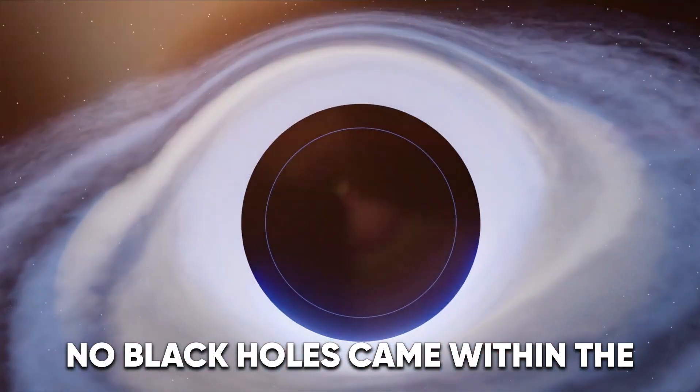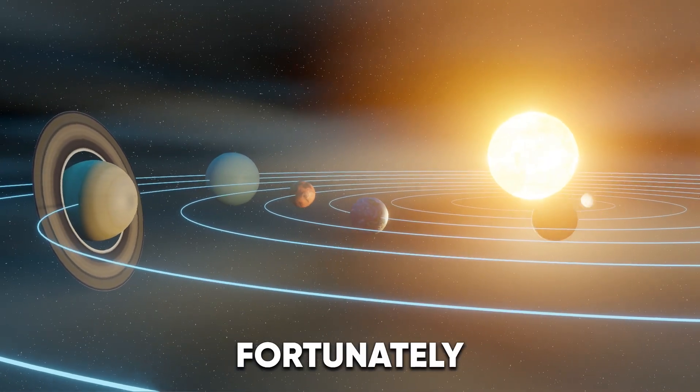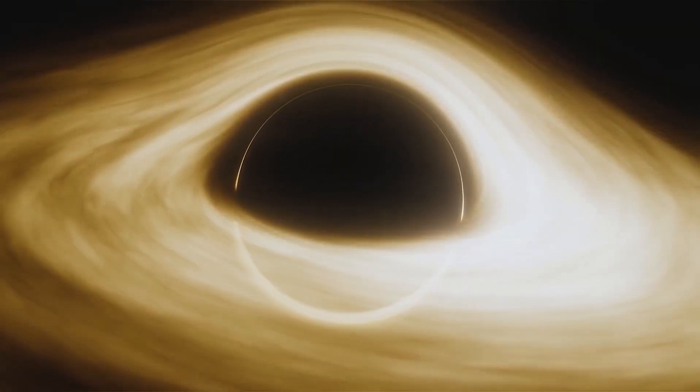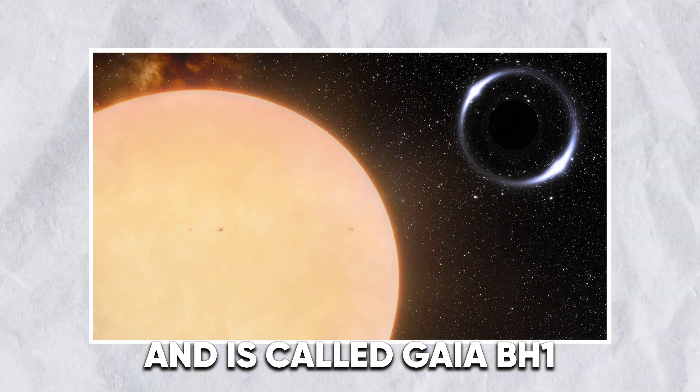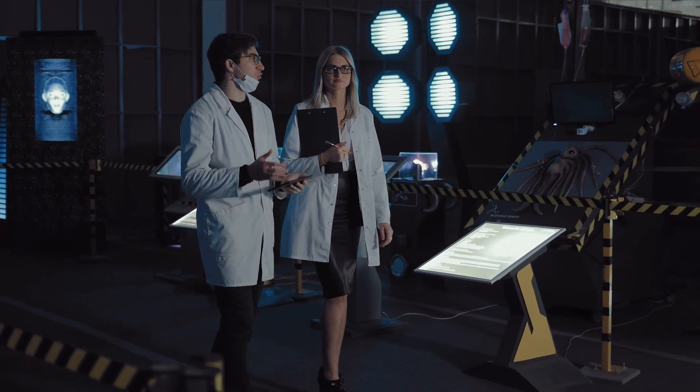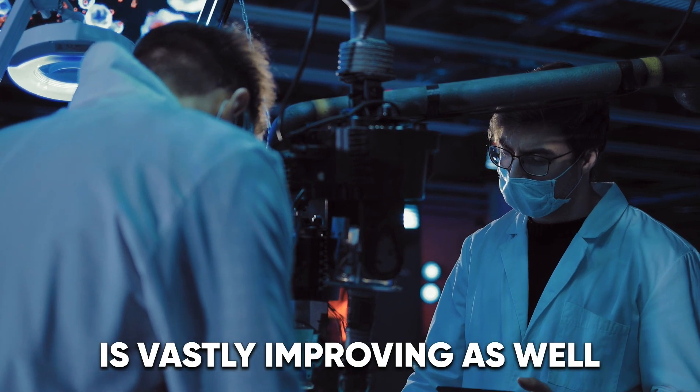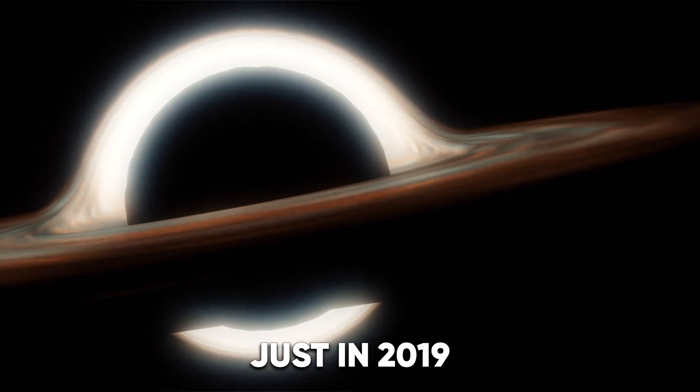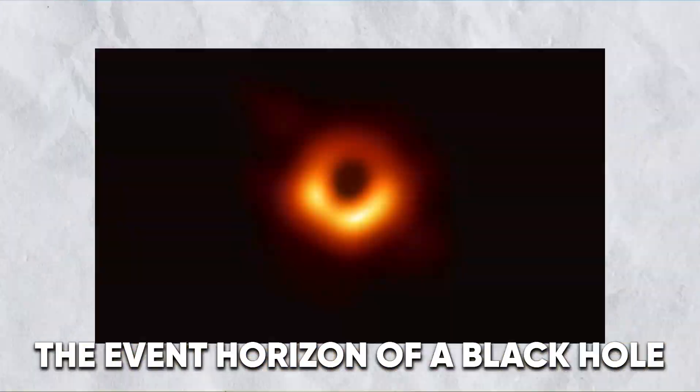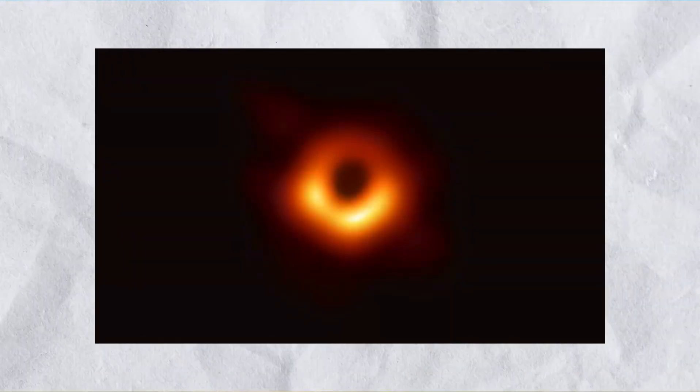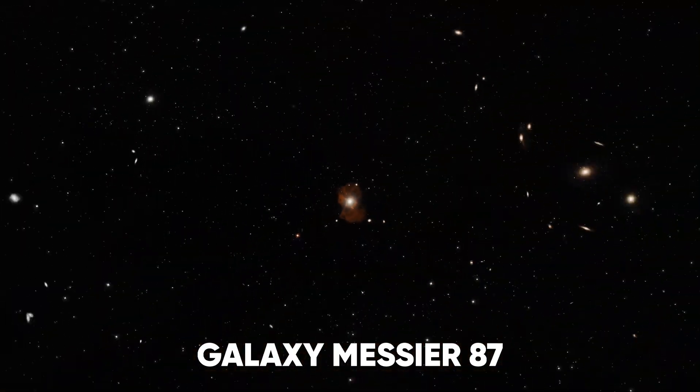Luckily, no black holes came within the vicinity of Earth or even the solar system. Fortunately, the nearest black hole is located over 1,600 light-years away and is called Gaia BH-1. Our understanding of these peculiar black holes is improving generation by generation as our technology is vastly improving as well. Just in 2019, the Event Horizon Telescope succeeded in producing the first-ever image of the event horizon of a black hole, specifically the black hole at the center of the elliptic galaxy Messier 87.